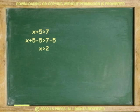For example, in x plus 5 is greater than 7, subtract 5 from both sides. 7 minus 5 is 2. x is greater than 2. The direction of the arrow did not change.